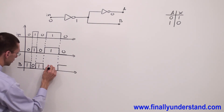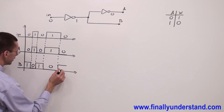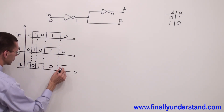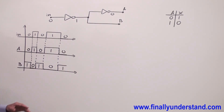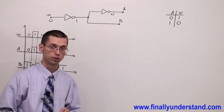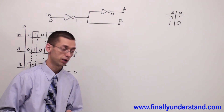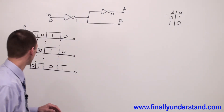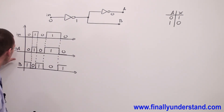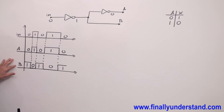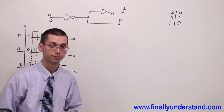This is going to be zero and this is one. So this is the timing diagram which is the solution to the problem, because I found what waveforms I'm going to have at point A and point B for the given input waveform.